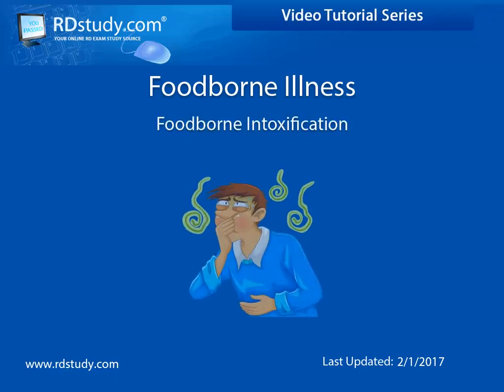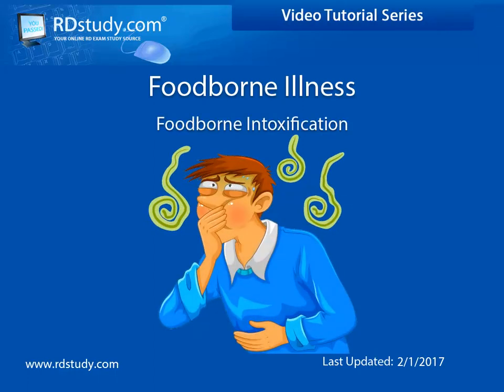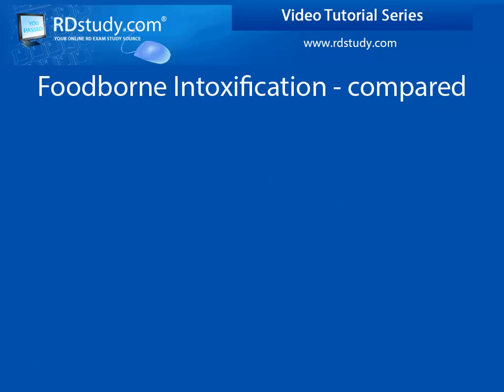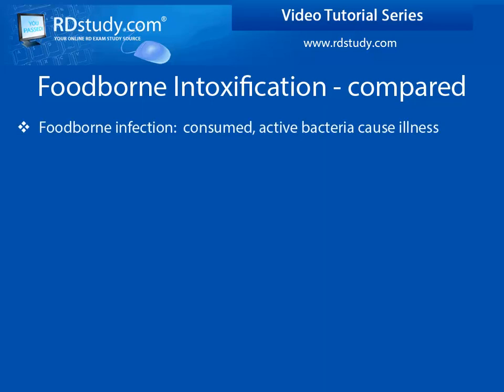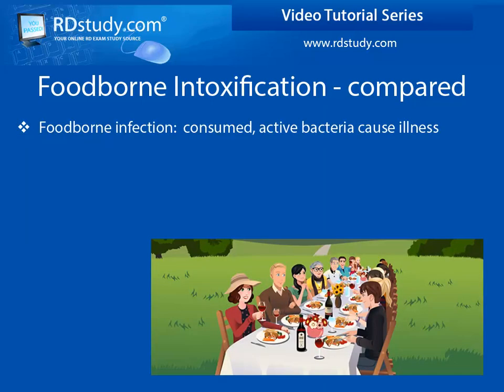This video will explain the concept of foodborne intoxication and how it fits underneath the foodborne illness umbrella. Many ask, what is the difference between foodborne infection, foodborne intoxication, and toxico-infection? Foodborne infection occurs when a food product is consumed that contains enough quantity of a live pathogenic bacteria that will cause illness within the individual. The live bacteria are the causative agent in the infection resulting in illness.